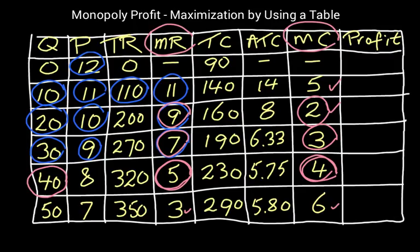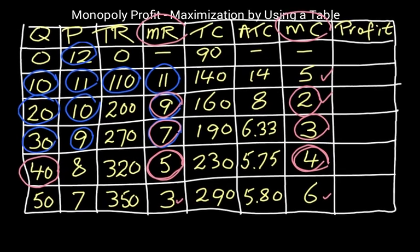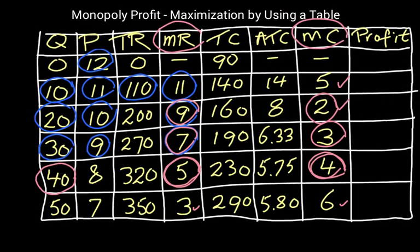So for the first value in the profit column, we have profit equals total revenue minus total cost. So 0 minus 90, we have a loss of 90, so minus 90 in the profit column.